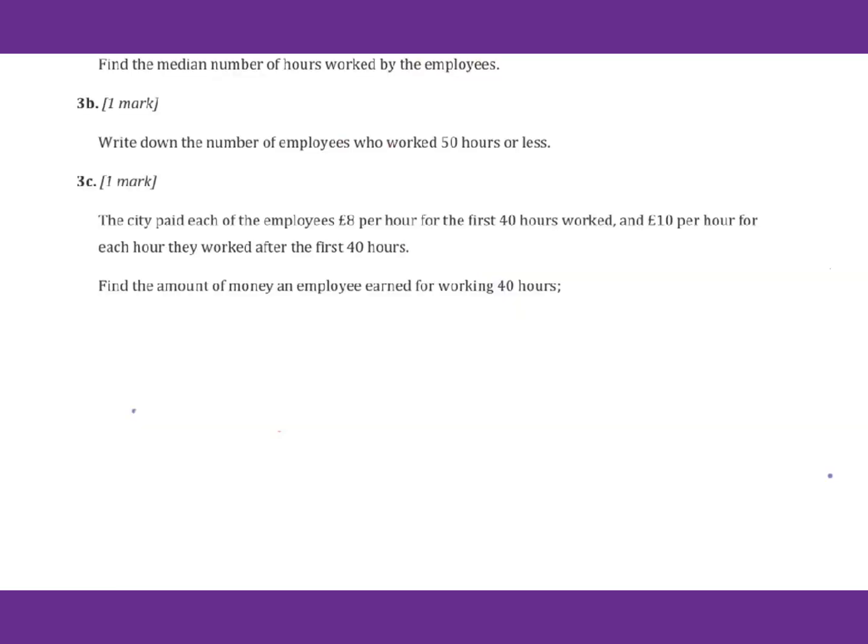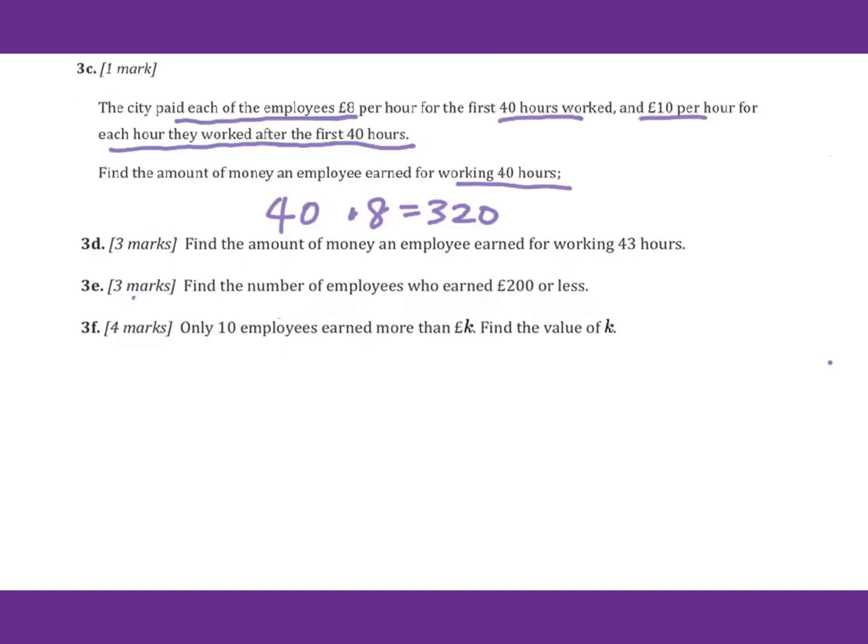For 3c, the city paid each employee 8 pounds per hour for the first 40 hours worked, and 10 pounds per hour for each hour they worked after the first 40 hours. Find the amount of money an employee earned for working 40 hours. For 3d, find the amount of money an employee earned for working 43 hours. For the first 40 hours paid per hour 8 pounds plus extra 3 paid 10 pounds per hour. So we get 350 pounds.